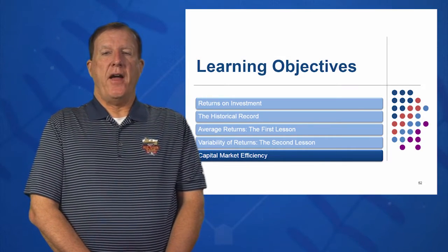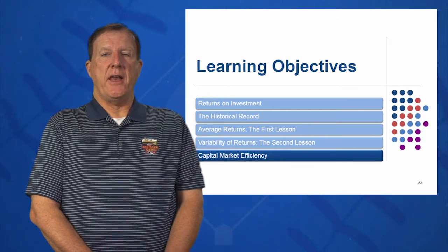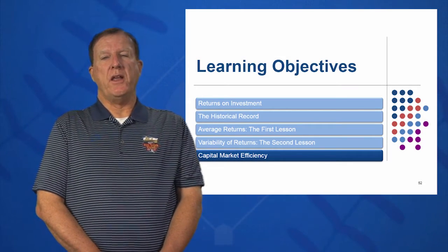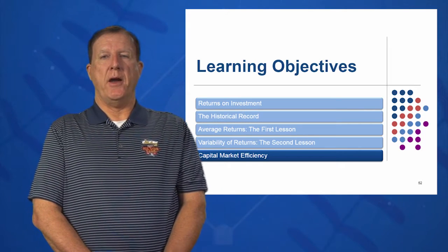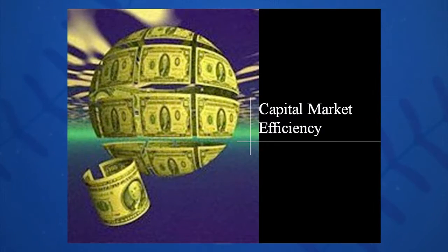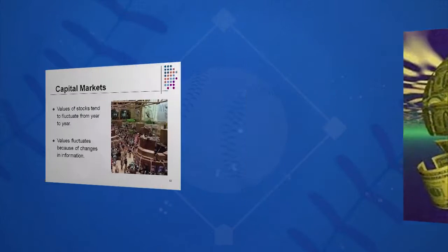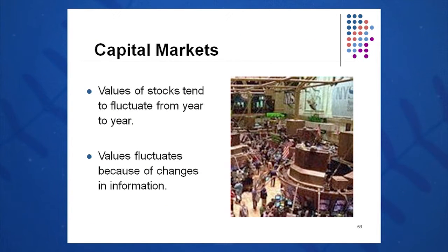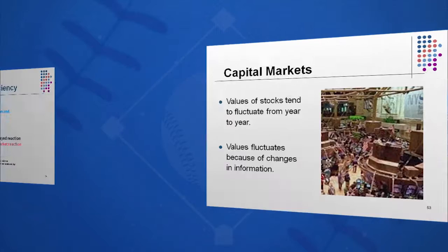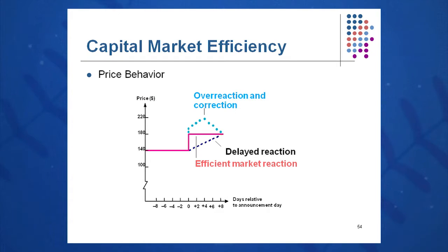In learning objective number five, we're going to study capital market efficiency. What exactly is an efficient capital market? We know that the values of stocks fluctuate by the second and also from year to year, and these values fluctuate because of changes in information. Essentially, an efficient capital market is one where prices change rapidly and adjust rapidly to changes in information.